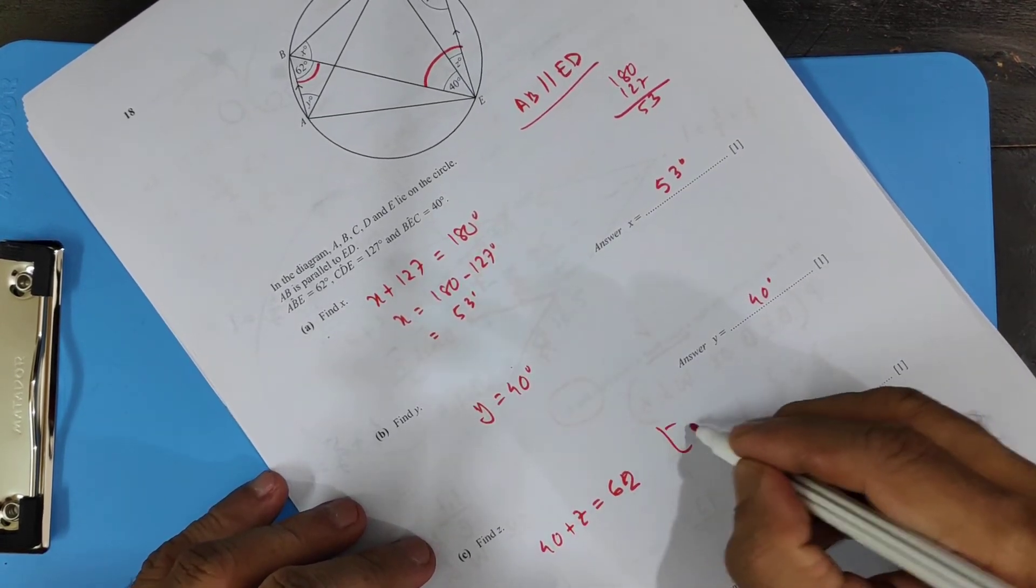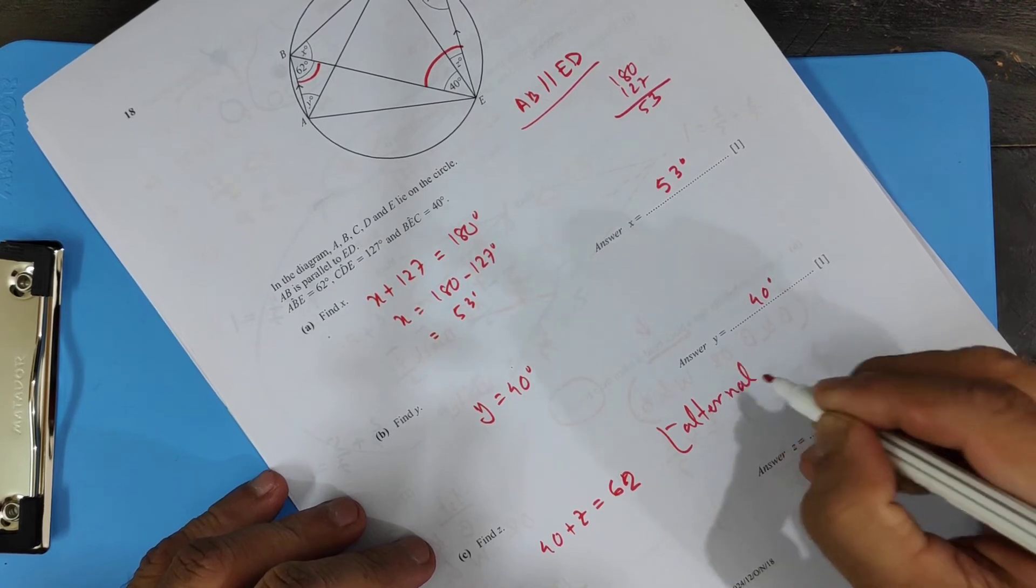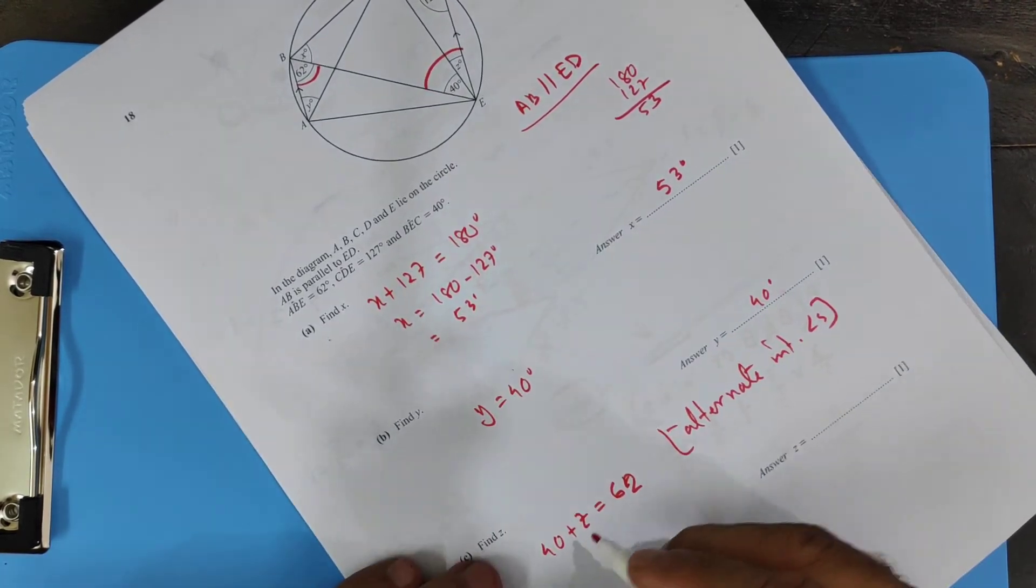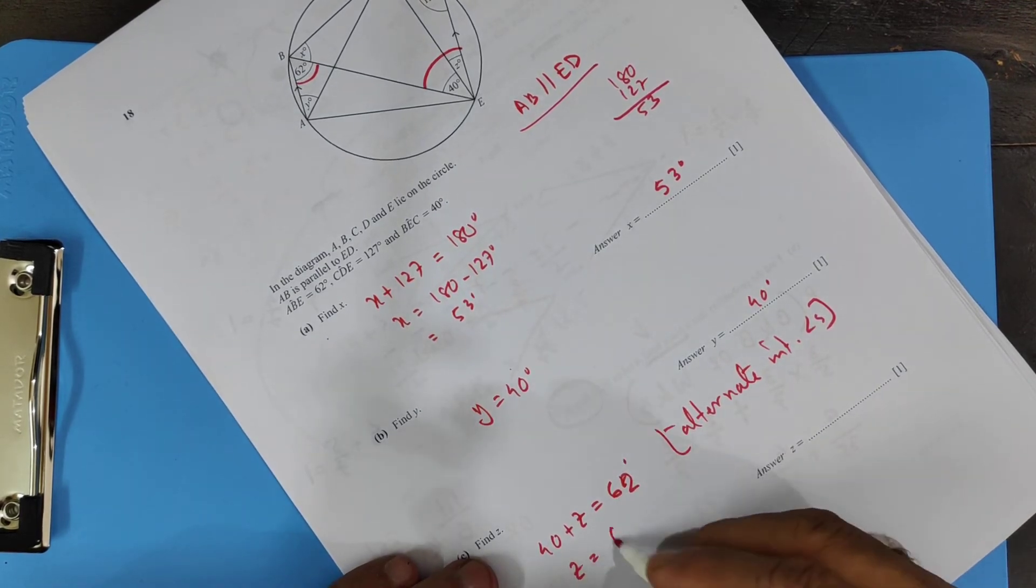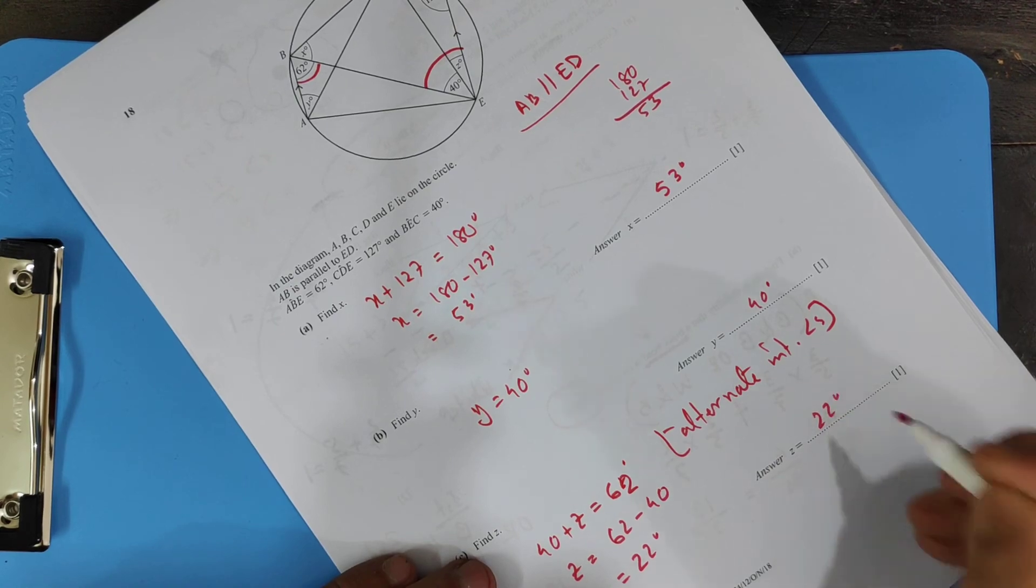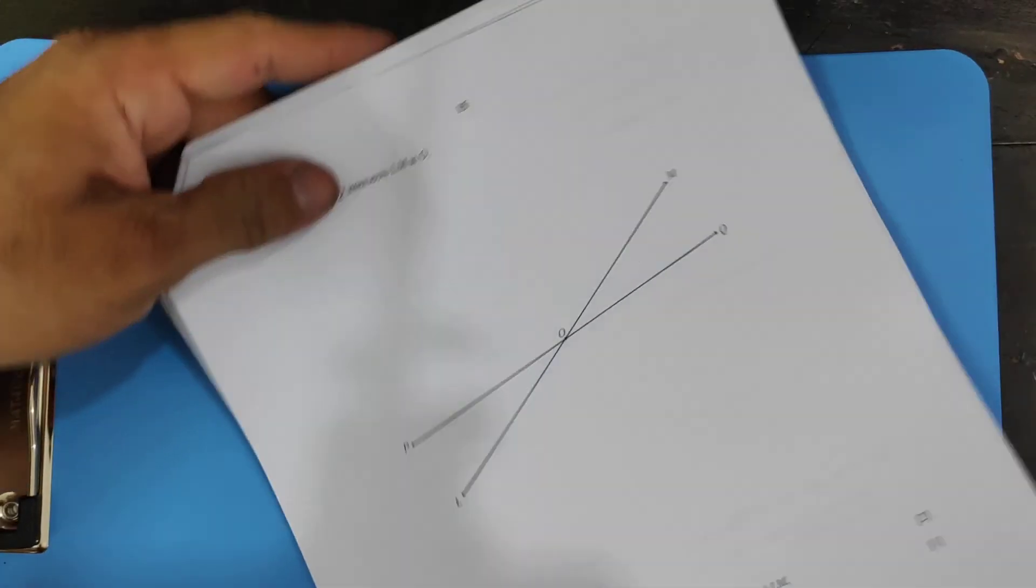Alternate interior angles. You don't need this, but I'm just writing down alternate interior angles. So z equals 62 minus 40 equals 22 degrees. So that's 22 degrees. This one is done.